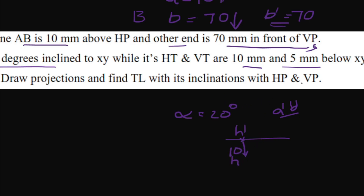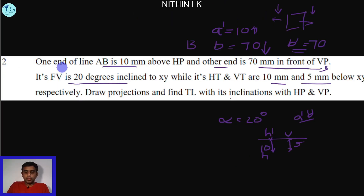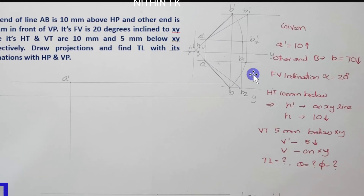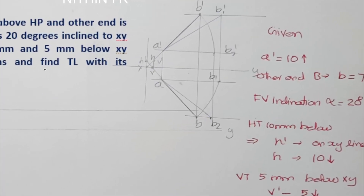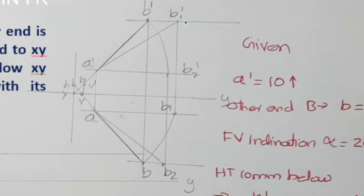The vertical trace in the front view: in the top view, extend the line to get point V, and in the front view extend the line to get V-dash on the XY line. VT is 5mm below XY. We will use the rotating line method for this problem.